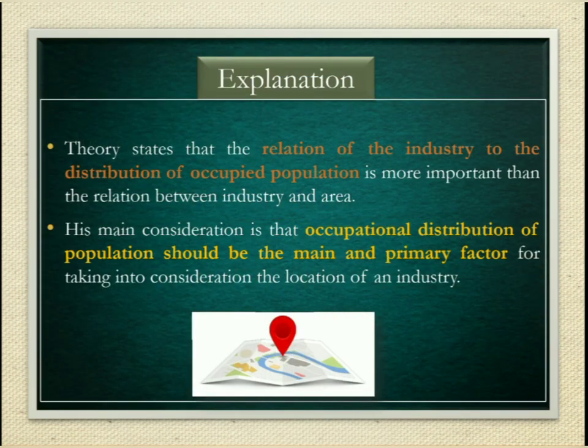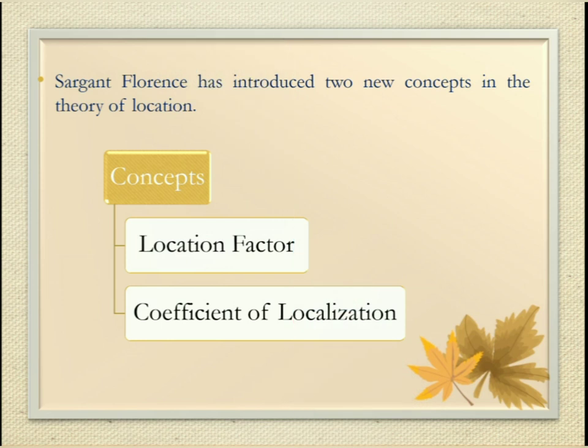Sgt. Florence's Theory of Industrial Location states that the relation of industry to the distribution of occupied population is more important than the relation between industry and area. His main consideration is that the occupational distribution of population should be the primary factor for determining the location of an industry. Florence has worked out statistical measures of the degree of localization of different industries from the census of production.